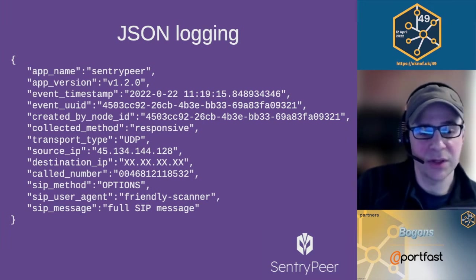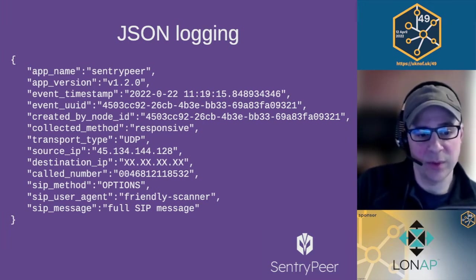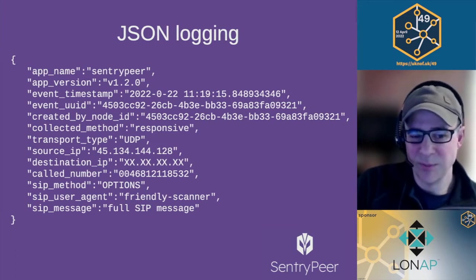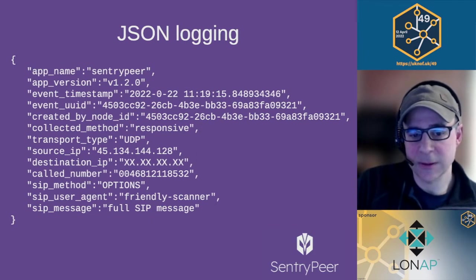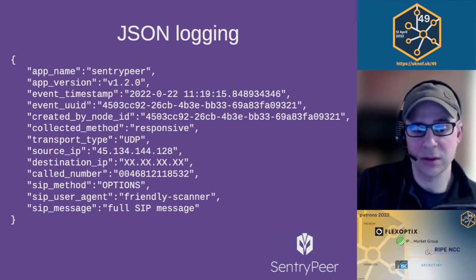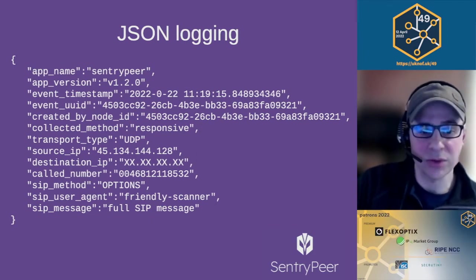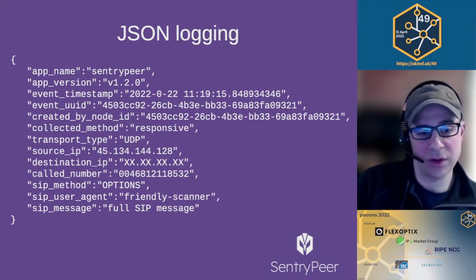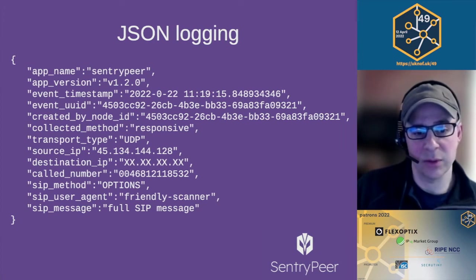That's the JSON output and what it looks like — there's quite a bit of information in there. I also log the destination IP, though I'm not sure if that will stay, because that publishes where you're running the node. I might give you an option to block that out since it leaks where you're running things. I would advise running on public IPs anyway.